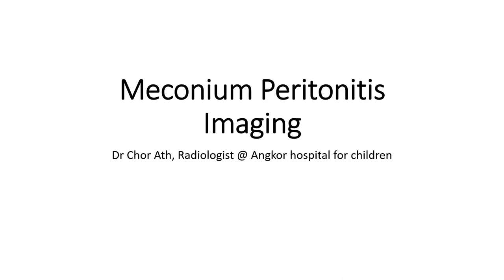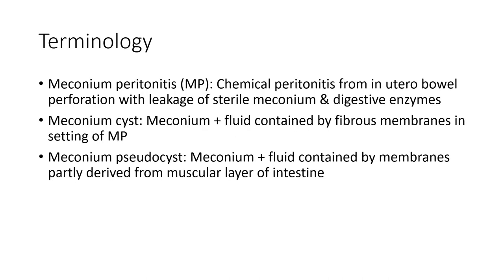Hello everyone. Today I am going to show you about meganium peritonitis. Meganium peritonitis, AMP, is chemical peritonitis from in utero bowel perforation with leakage of sterile meganium and digestive enzymes. Meganium cyst is meganium plus fluid contained by fibrous membrane in the setting of meganium peritonitis.